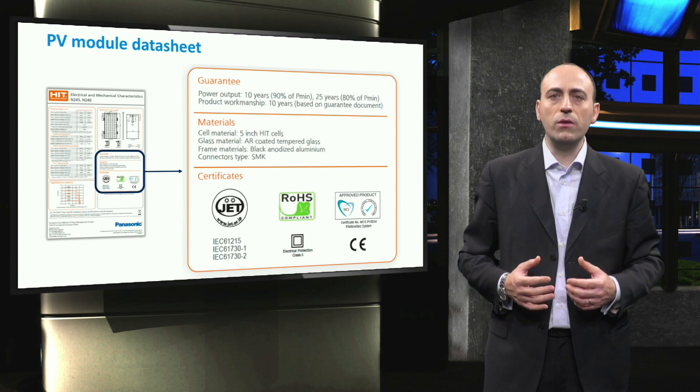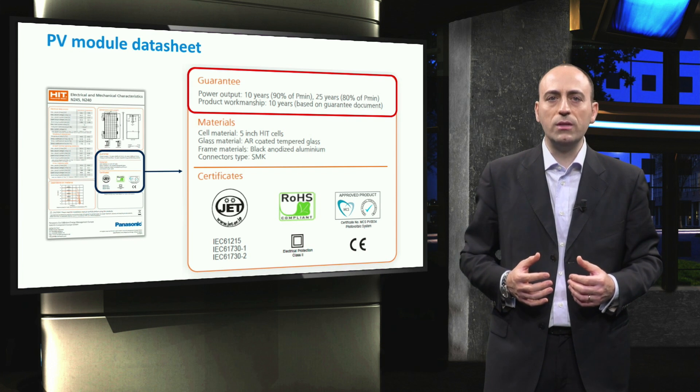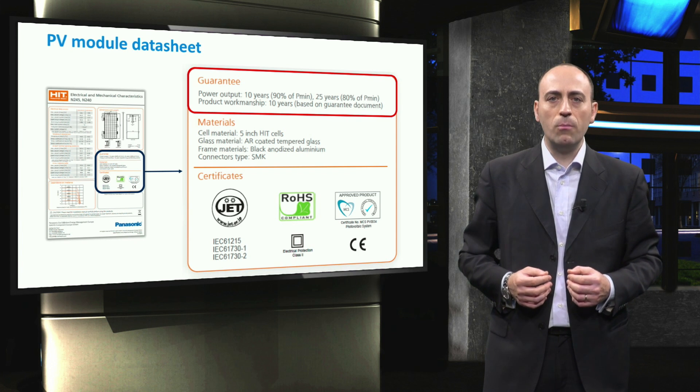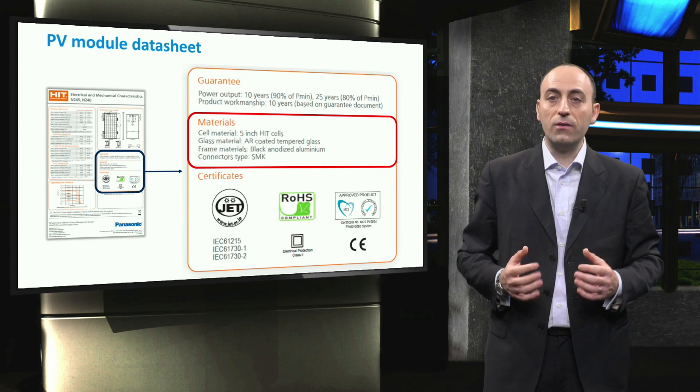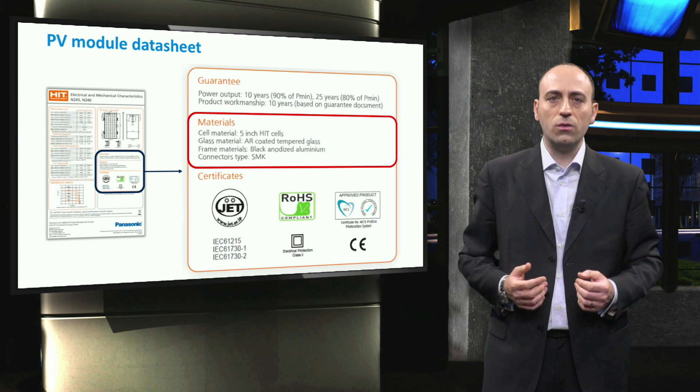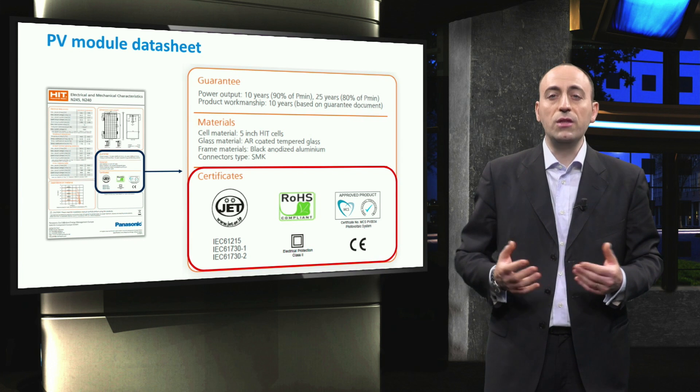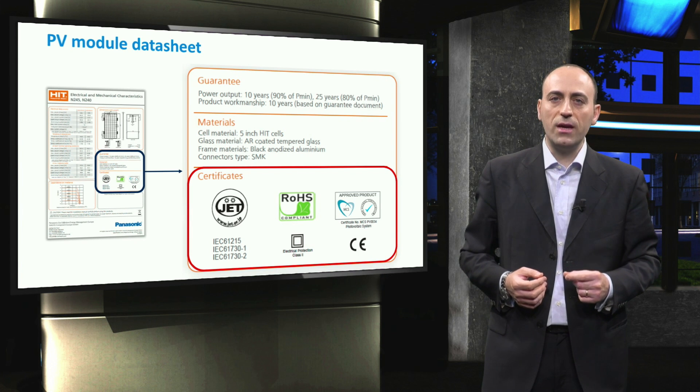Below the dimension and weight box, the warranty strategy can be found. The warranty varies depending on the module manufacturer. You can see, for example, that this module has a standard tiered warranty that warranties a power output of 90% of the minimum power output for the first 10 years. From year 10 to year 25, 80% of the minimum power output is warrantied. Then, the various materials of which the module is composed are listed. These materials include the heterojunction with the intrinsic thin layer solar cells, the anti-reflection coated glass, the black anodized aluminum frame, and the connectors. Finally, the certificates are listed, indicating that the module is up to the standards. You will learn more about these certificates later in the course.